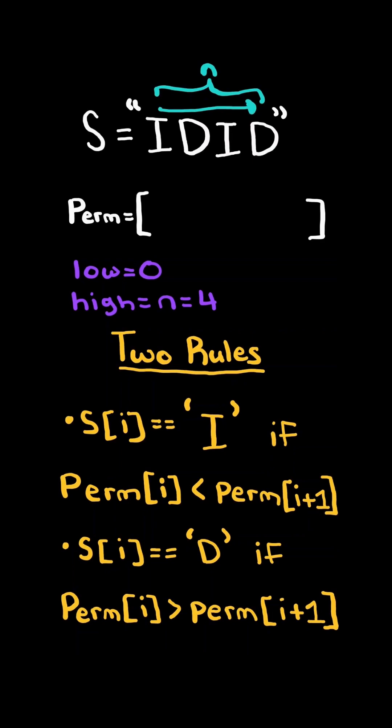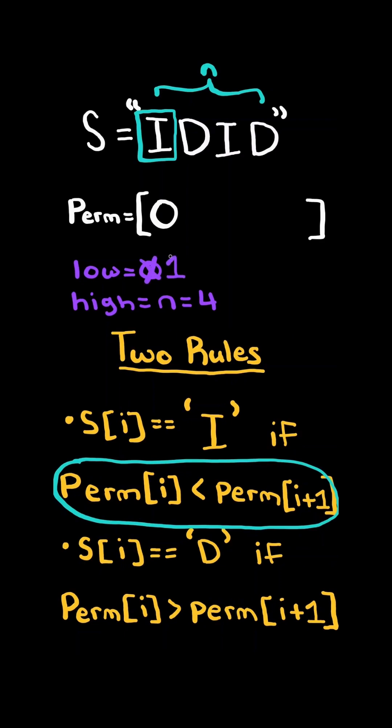We then iterate through the string s. If the character is an I, this means in the permutation array we want the current number to be smaller than the next. So we append the smallest available number, low, and then increment low and continue to the next character.